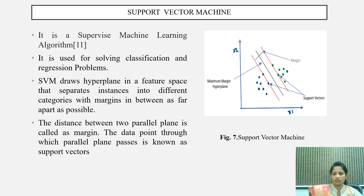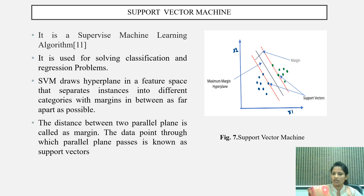Support vector machine also belongs to the supervised machine learning algorithm category. It is used for solving regression as well as classification problems. Support vector machine draws a hyperplane in the feature space that separates instances into different categories. The distance between the two parallel planes is called the margin. The data points through which the parallel planes pass are known as support vectors, which is why the algorithm is named support vector machine.